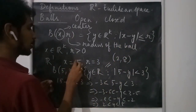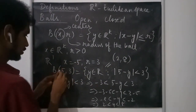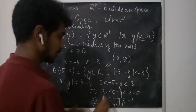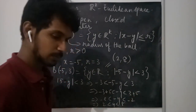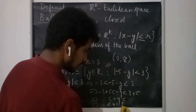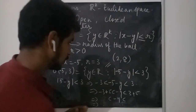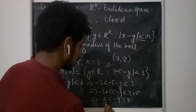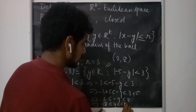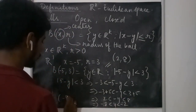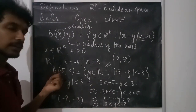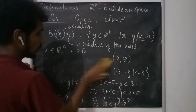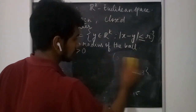What if we take center x = -5 with the same radius? The inequality |(-5) - y| < 3 becomes -3 < -5 - y < 3, and taking the reciprocal gives -8 < y < -2. So in this case you will have the open interval (-8, -2), which is the open ball centered at -5 with radius 3.